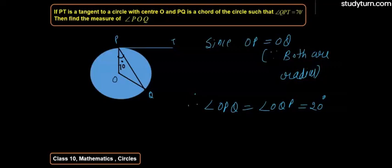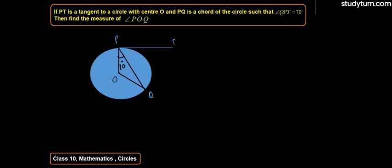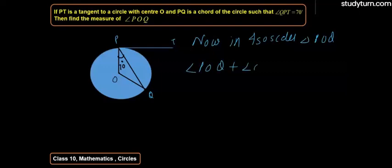Angles opposite to equal sides are equal. Now in isosceles triangle POQ, angle POQ plus angle OPQ plus angle OQP is equal to 180 degrees.